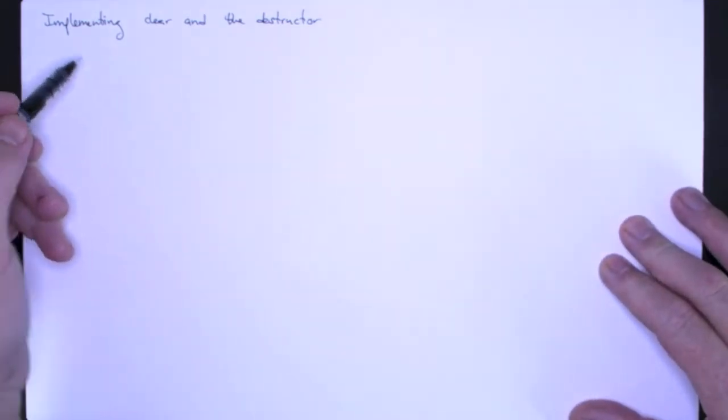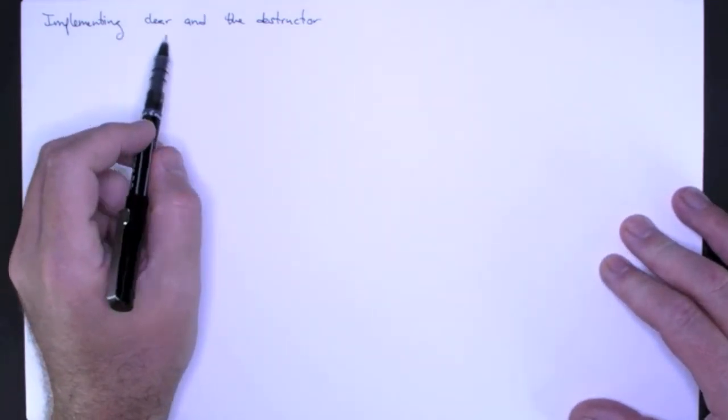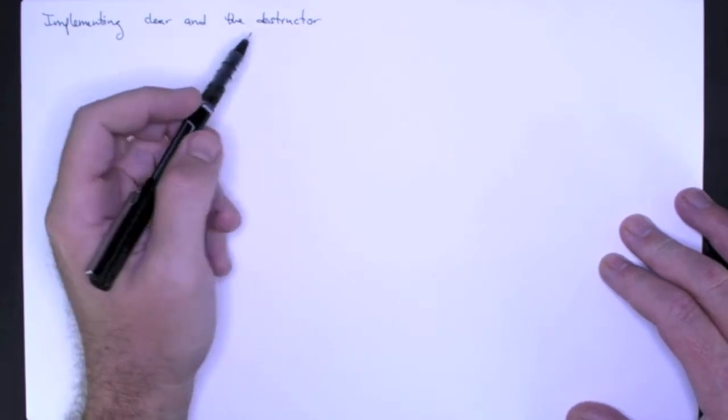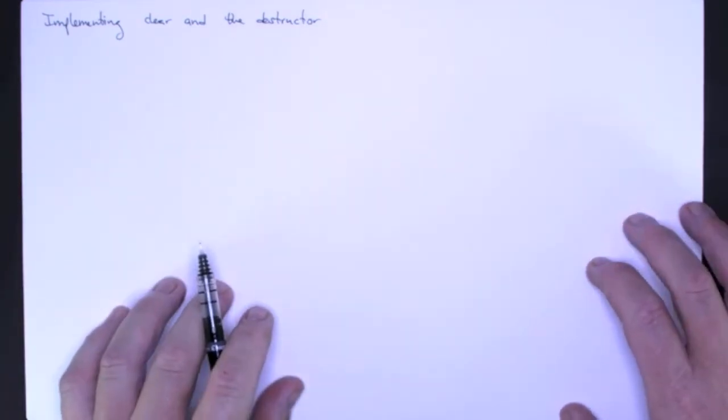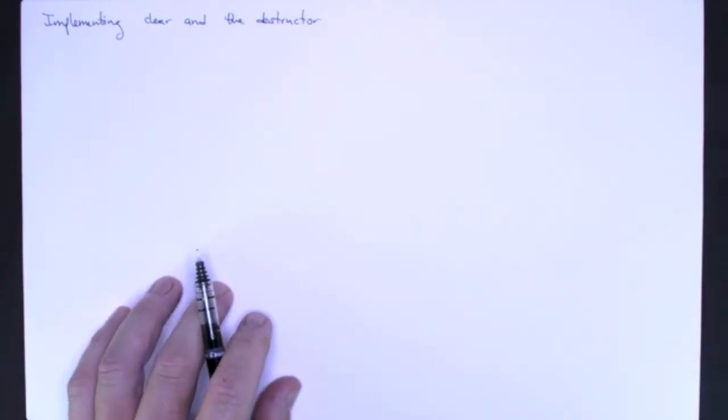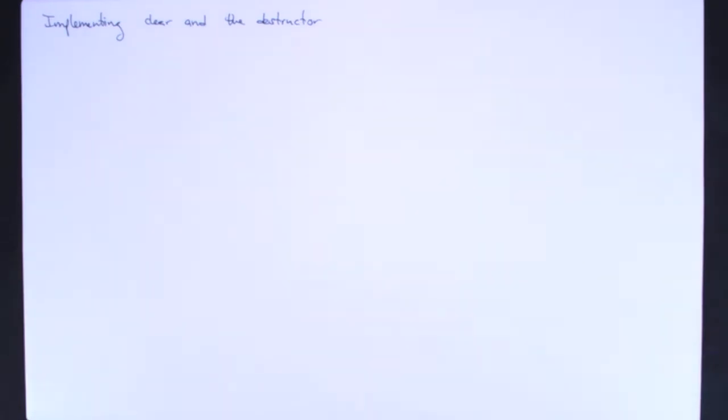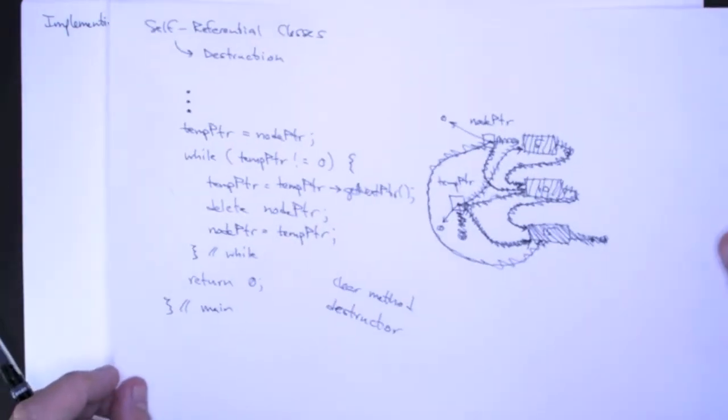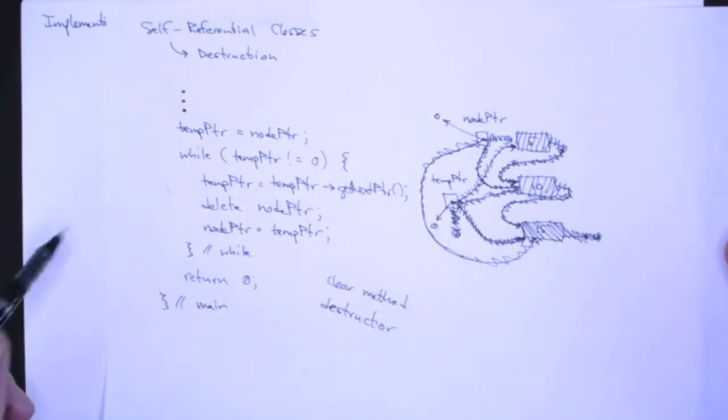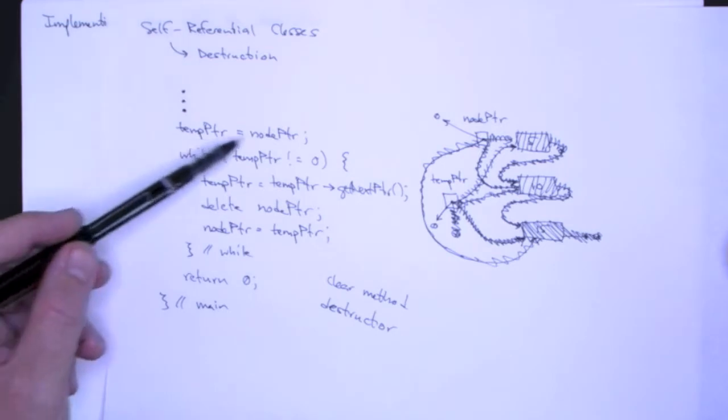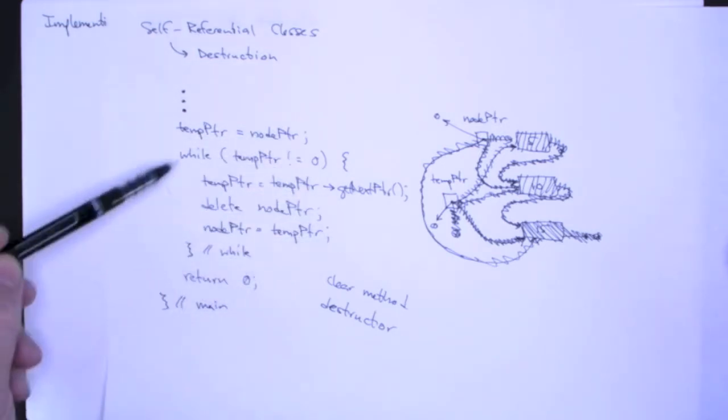So before going on to the other methods, I'm going to go ahead and implement the clear method and then the destructor. Part of the reason I'm doing it in this order is because we already have code for the clear method. This came right out of that main function where we were demonstrating how to deallocate our linked list.